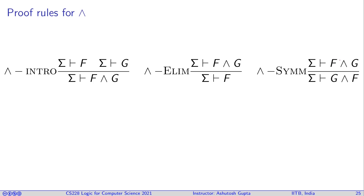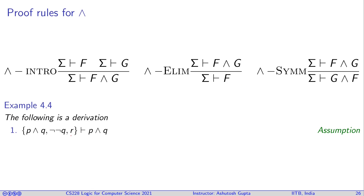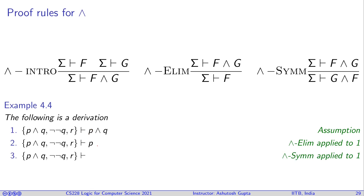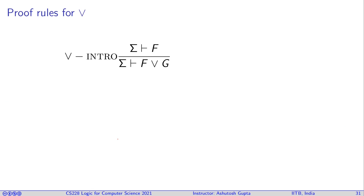There is also a symmetry rule for conjunction: if σ ⊢ F ∧ G, then σ ⊢ G ∧ F. In a sample derivation, we start with an assumption, apply conjunction elimination to extract one conjunct, then apply symmetry to swap the order — obtaining Q ∧ P from P ∧ Q. This demonstrates how the proof system works: proof rules plus premises yield newer and newer conclusions.